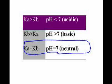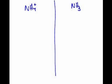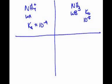I like to do this in a chart. Ammonium and his partner is ammonia. We only have ammonium. Ammonia is a weak base, Kb is 1.8 times 10 to the minus 5, we'll just round. Ammonium is a weak acid and his Ka is about 10 to the minus 9.